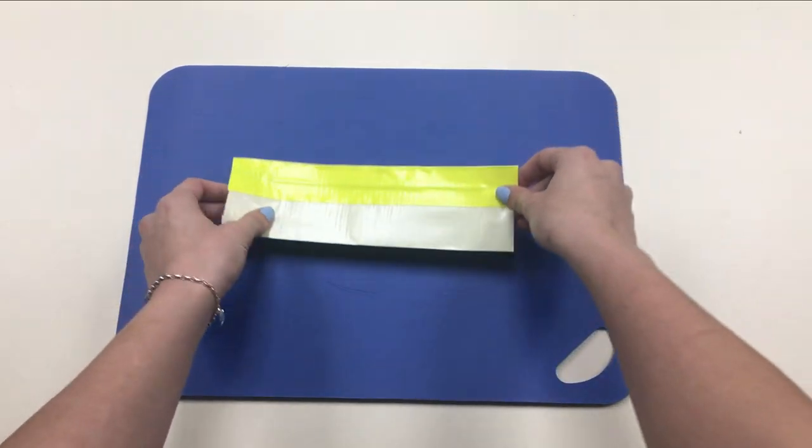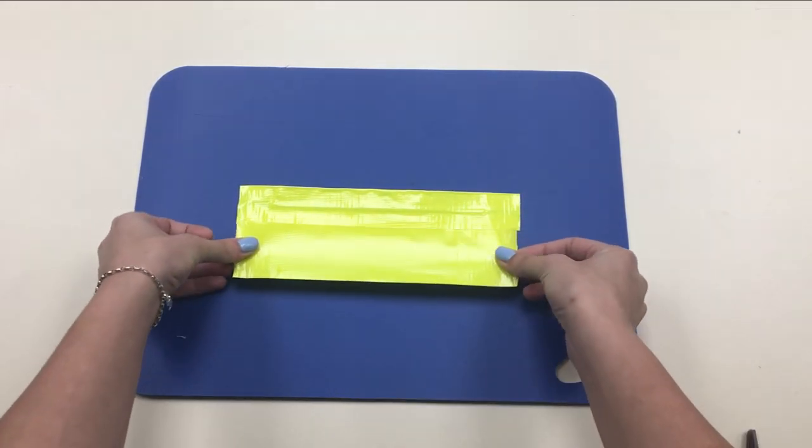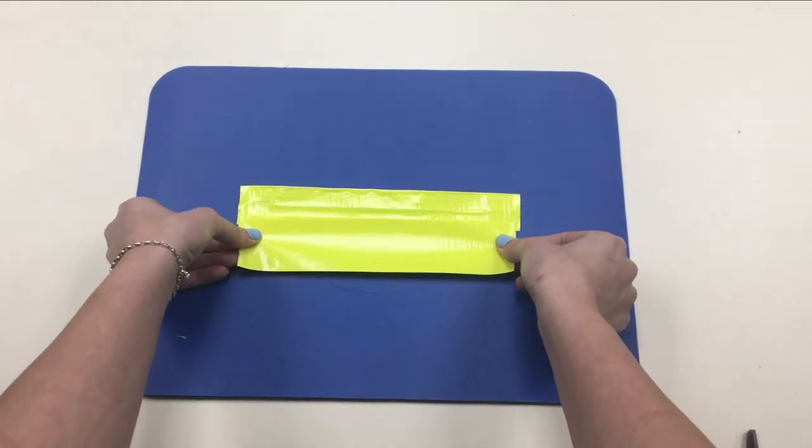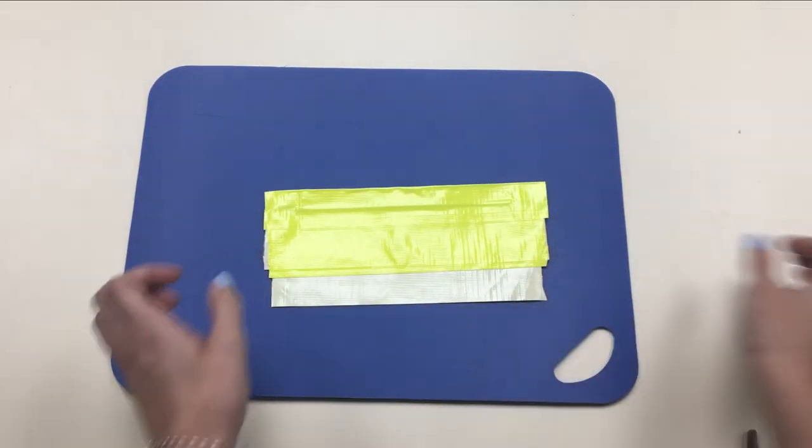Turn your piece over again and get another piece of duct tape. Slightly overlap with the top piece and press it down. Turn it around and continue doing this.